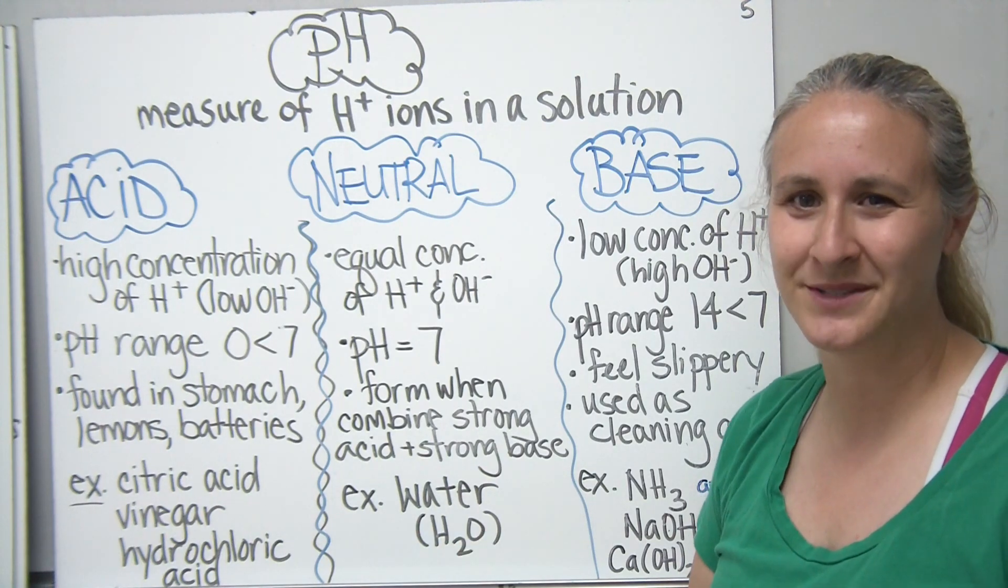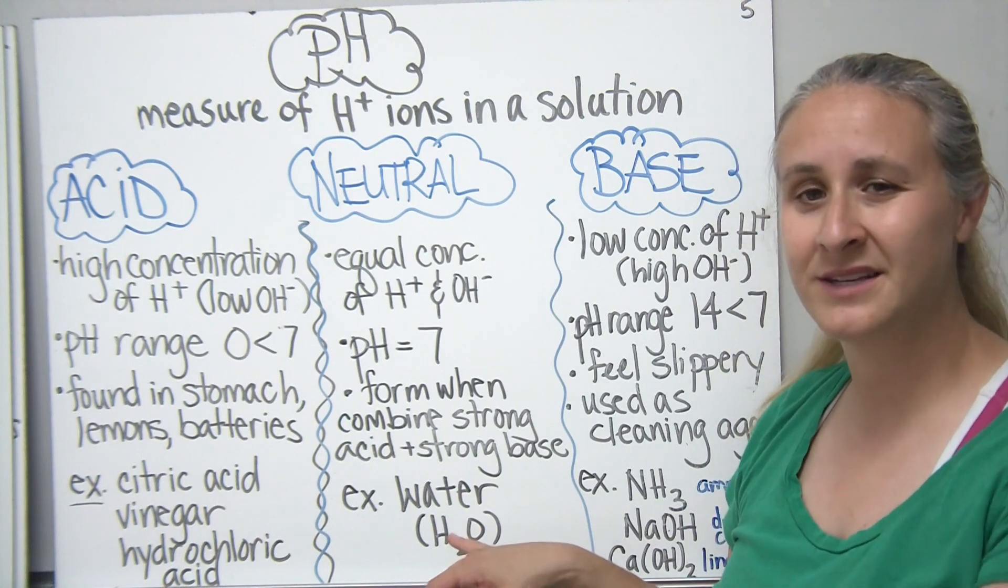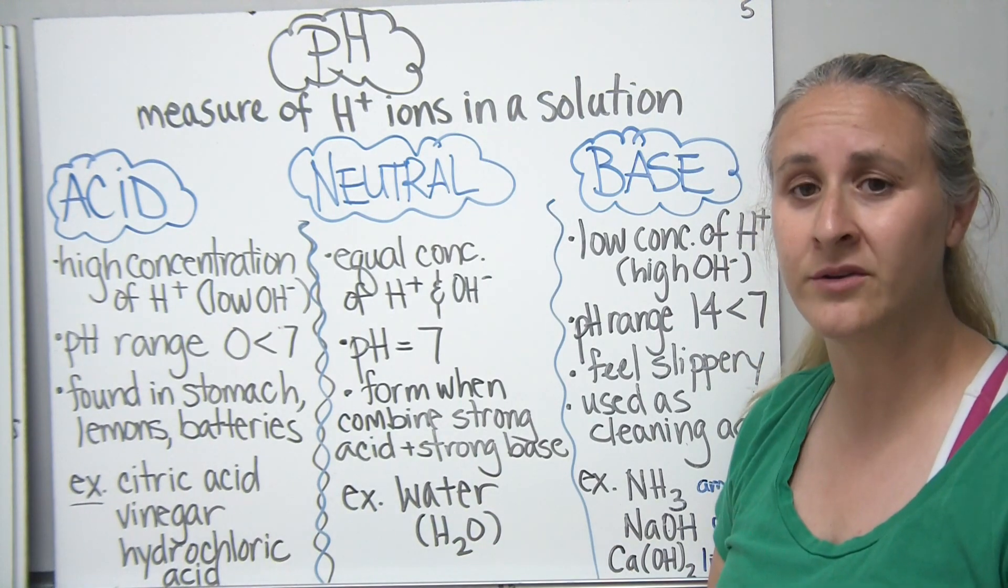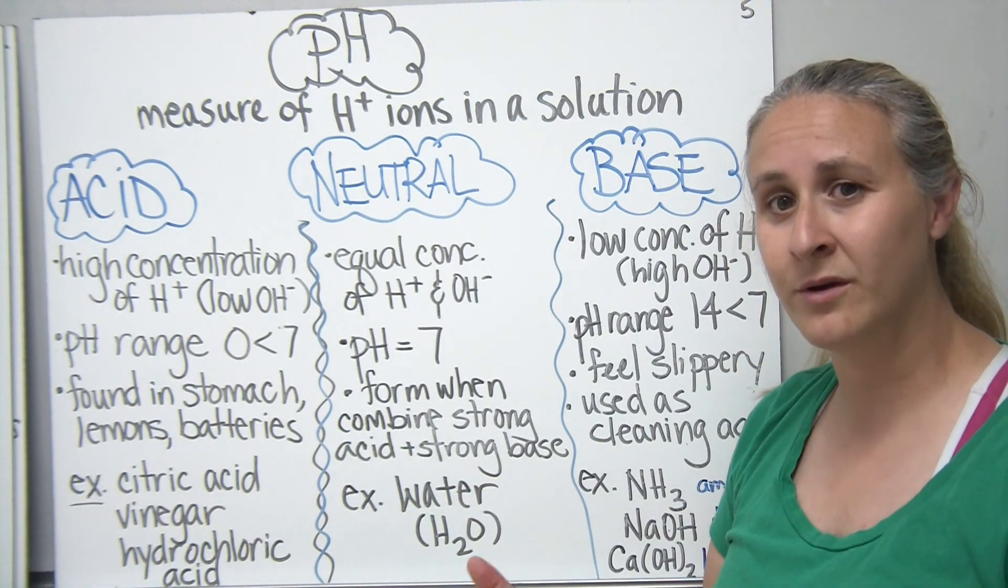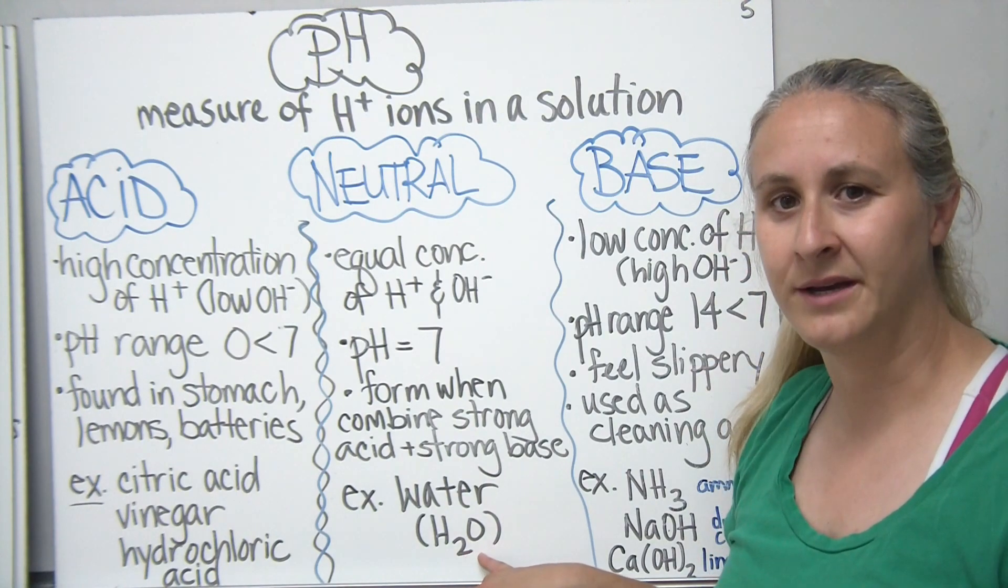When you take a strong acid and a strong base and put them together, typically you're going to form some sort of a salt and a water compound. And the water in this case happens to be neutral. So pure water, not necessarily the water that you find in a pond or a stream, but a pure water molecule is a neutral compound.